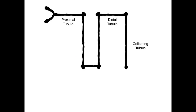We've got the proximal tubule, the distal tubule, and the collecting tubule. For the purposes of the actual RTAs — RTA type 1, RTA type 2, and RTA type 4 — there are obviously only three of them, and none of them correspond to the loop of Henle. So delete the loop of Henle from your brain when it comes to learning the RTAs. Type 2 RTA is in the proximal tubule. Type 1 RTA is in the distal tubule, and type 4 RTA is in the collecting tubule.